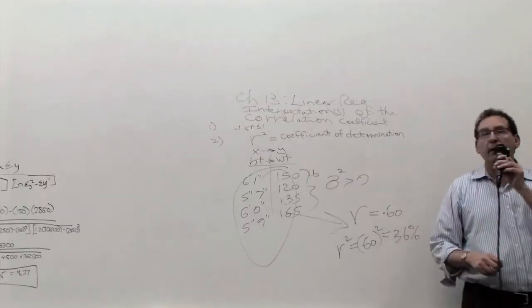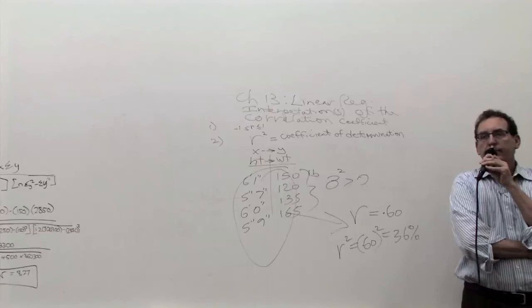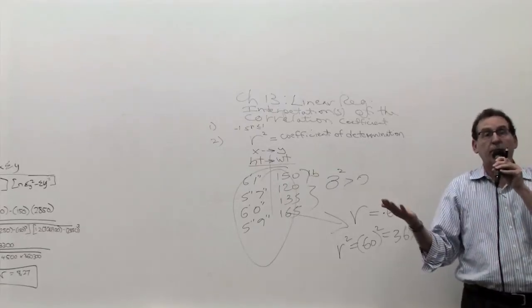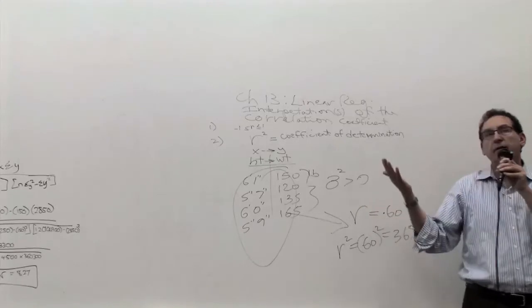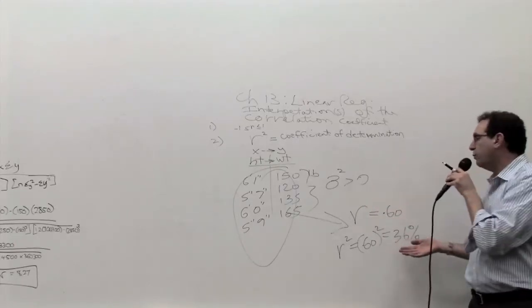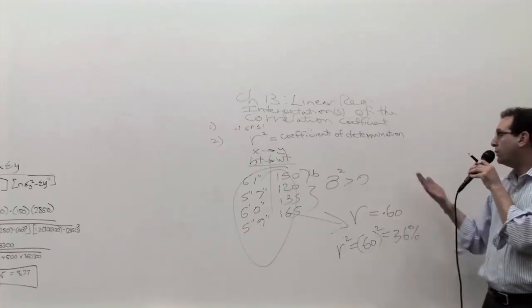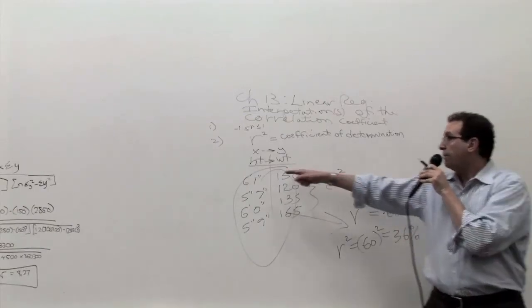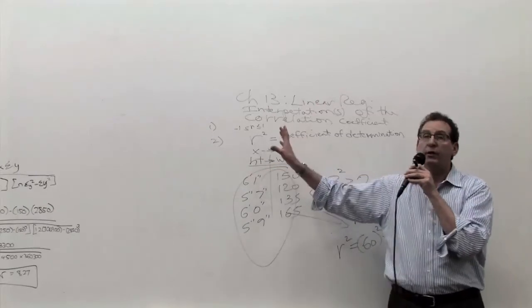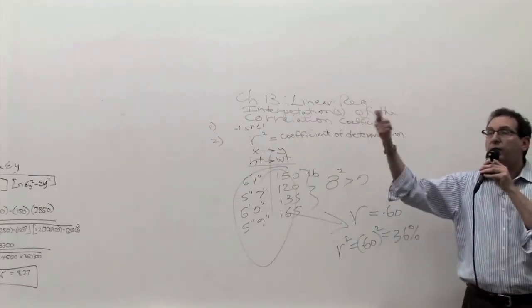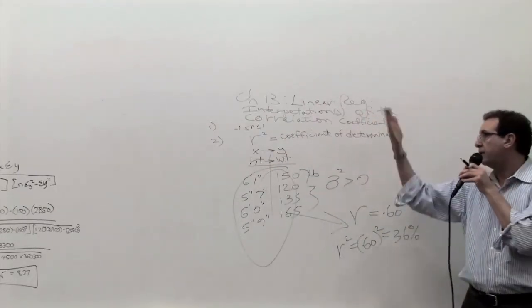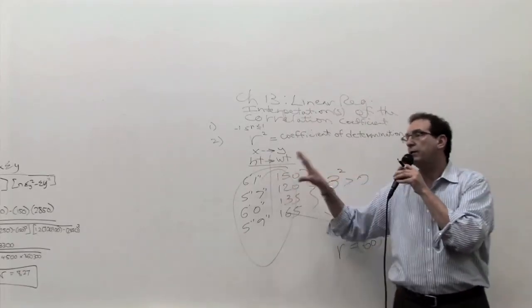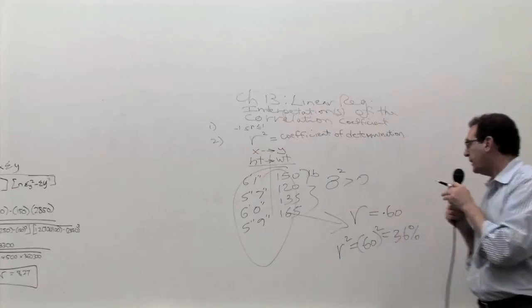So when you get a correlation of 0.6, which is pretty high, but when you square it, it looks smaller. That means you can explain 36% of the Y variable. And how much is unexplained? 100 minus 36 is 64. 64% is unexplained. How can you explain the other missing 64%? The answer is maybe there are other variables that affect, not just height. Height explains 36%. Maybe somebody's age, their sex, their exercise, their diet, their genetics, a whole bunch of other things that affect it. But height by itself explains 36%.